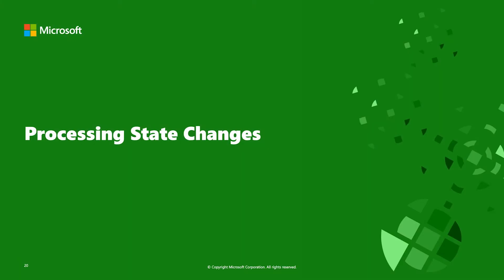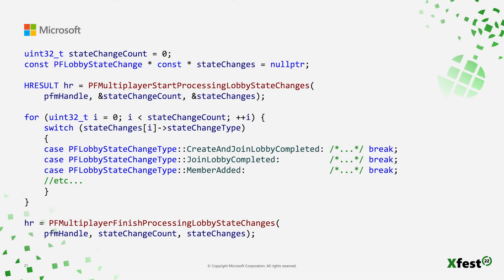Processing state changes: like PlayFab Party, PlayFab Multiplayer uses a process state change style approach for handling events. Most asynchronous operations have a corresponding state change event when the async operation is complete. To handle these events, we first call StartProcessingStateChanges, which returns any changes since the last time the function was called. We iterate across the array, switch on the type, and handle each change appropriately. Finally, call FinishProcessingStateChange.